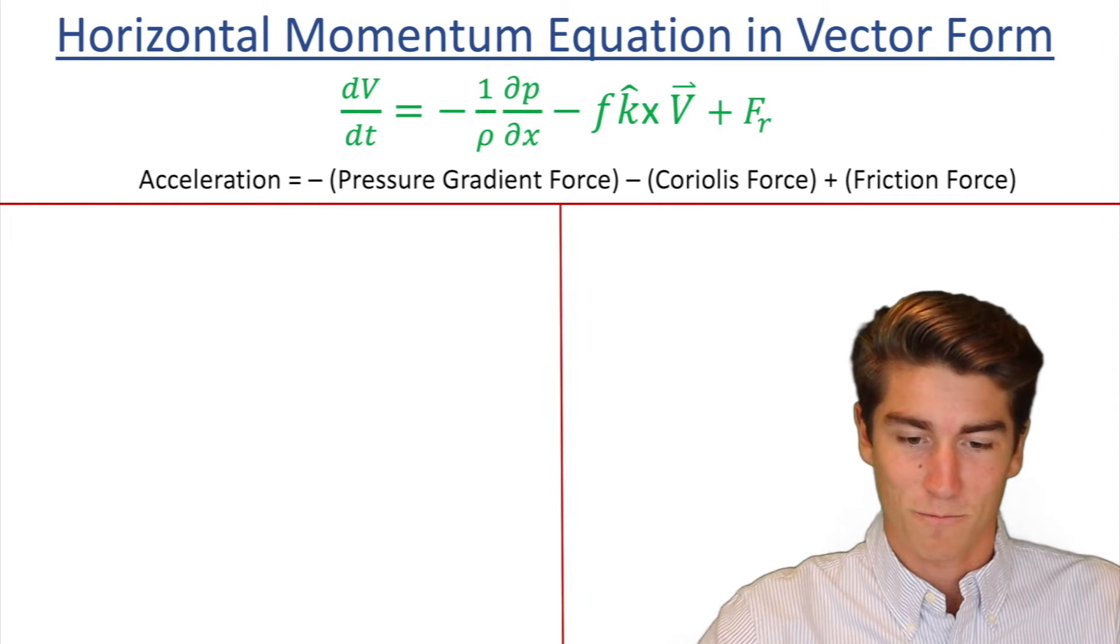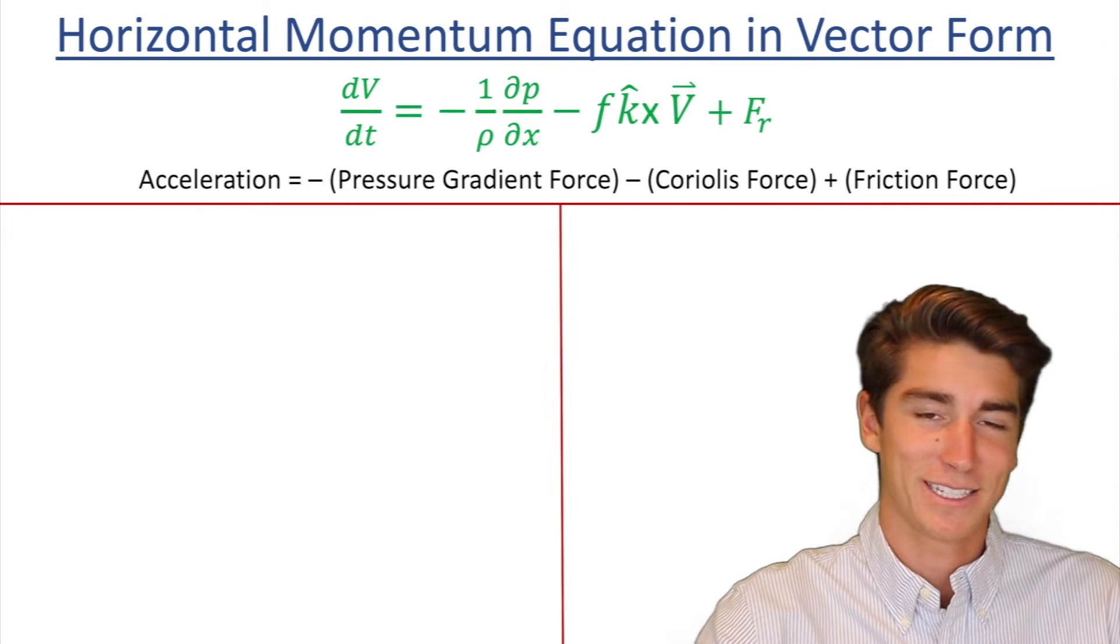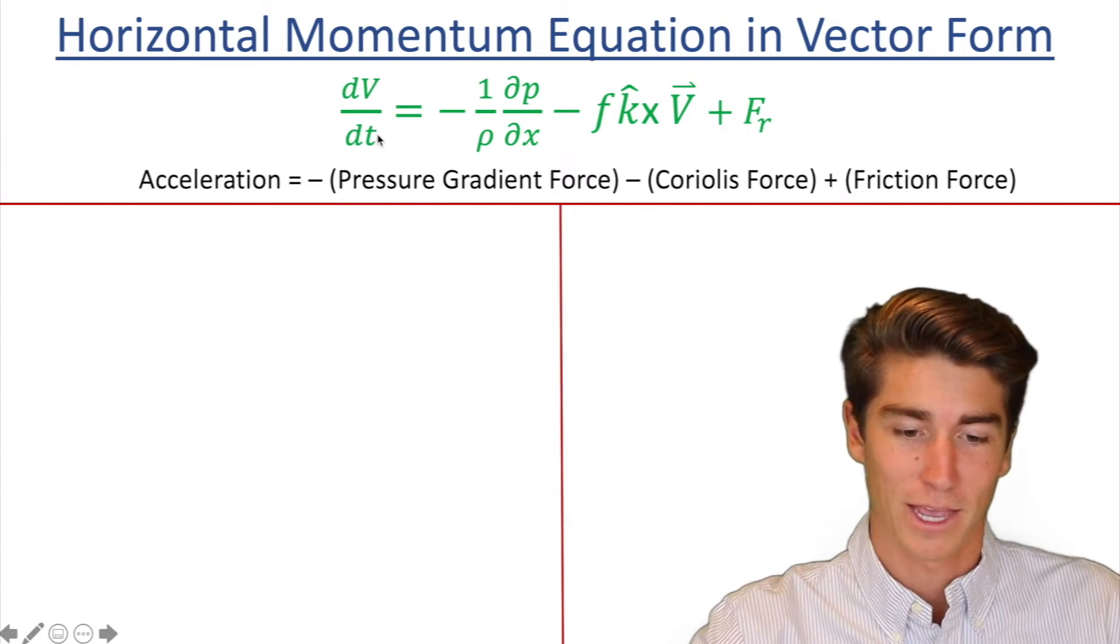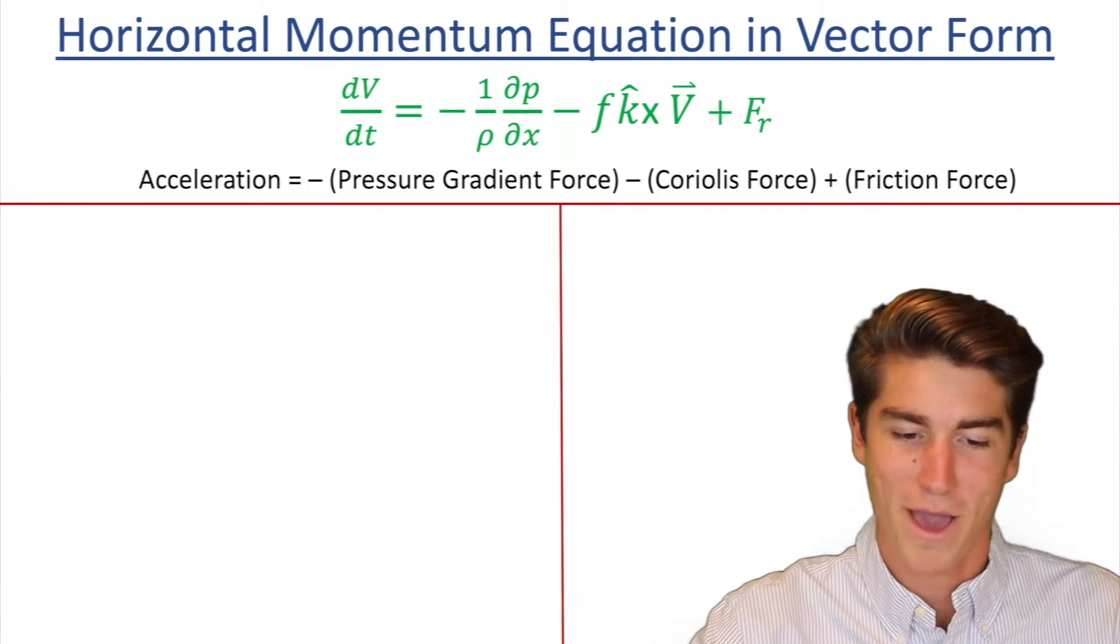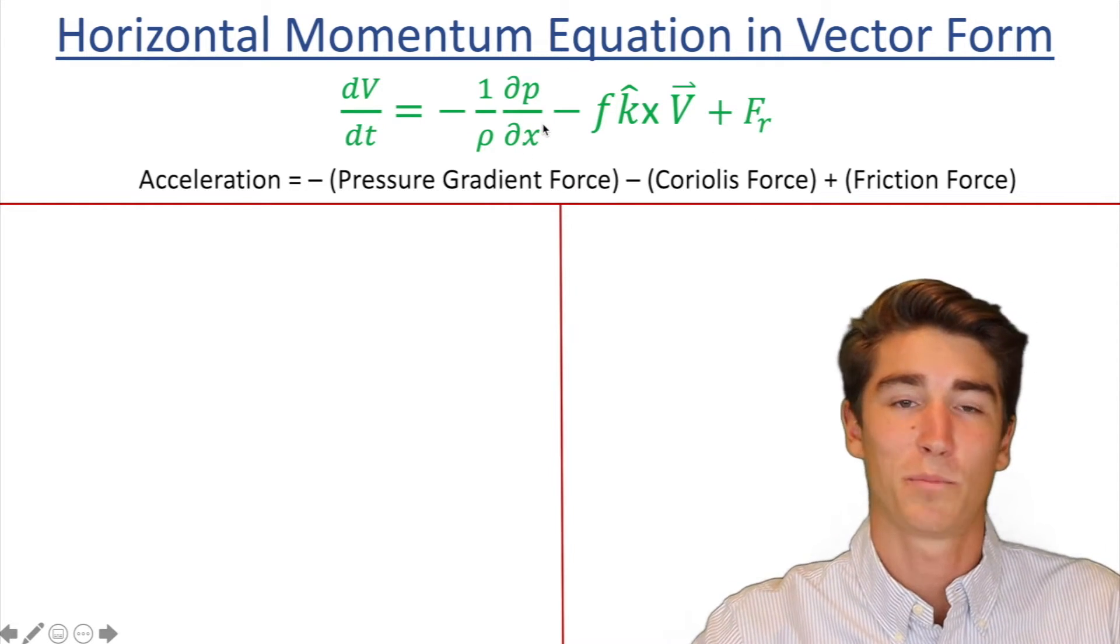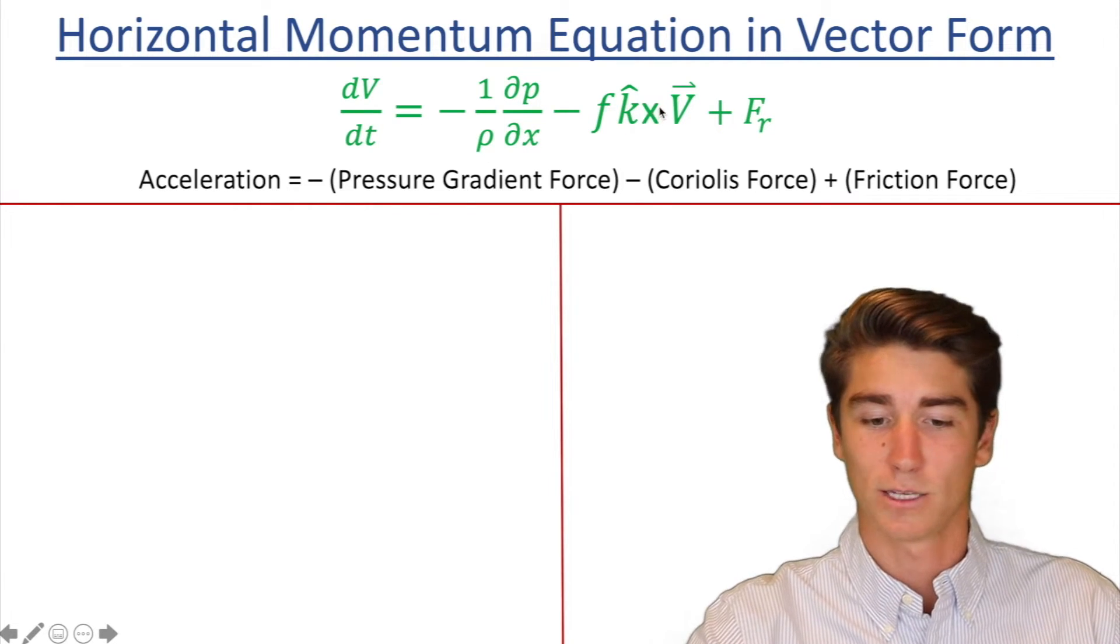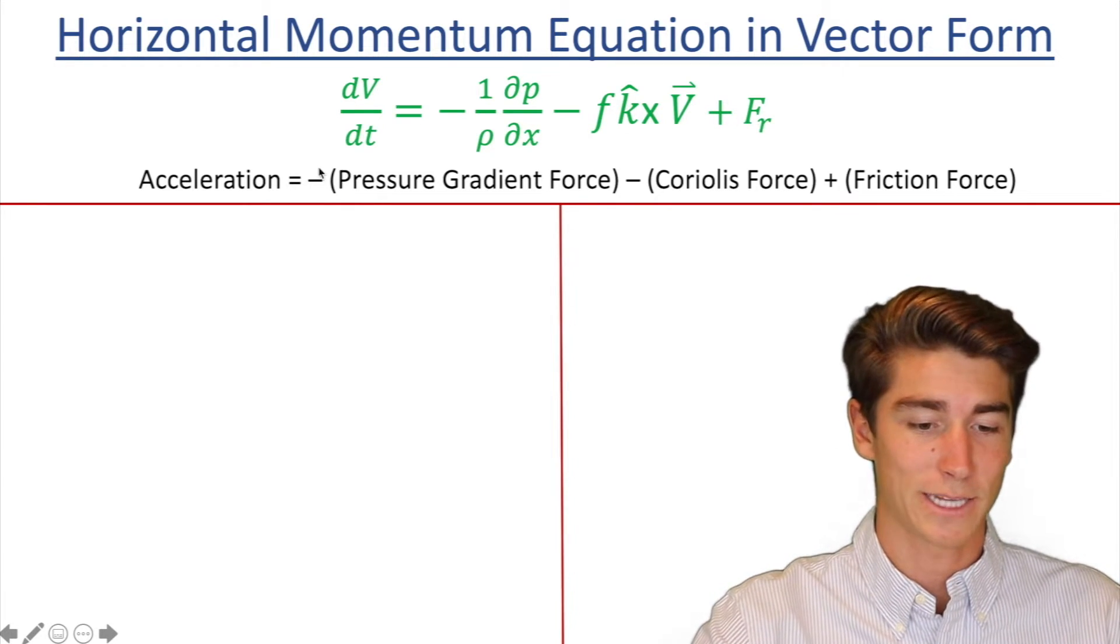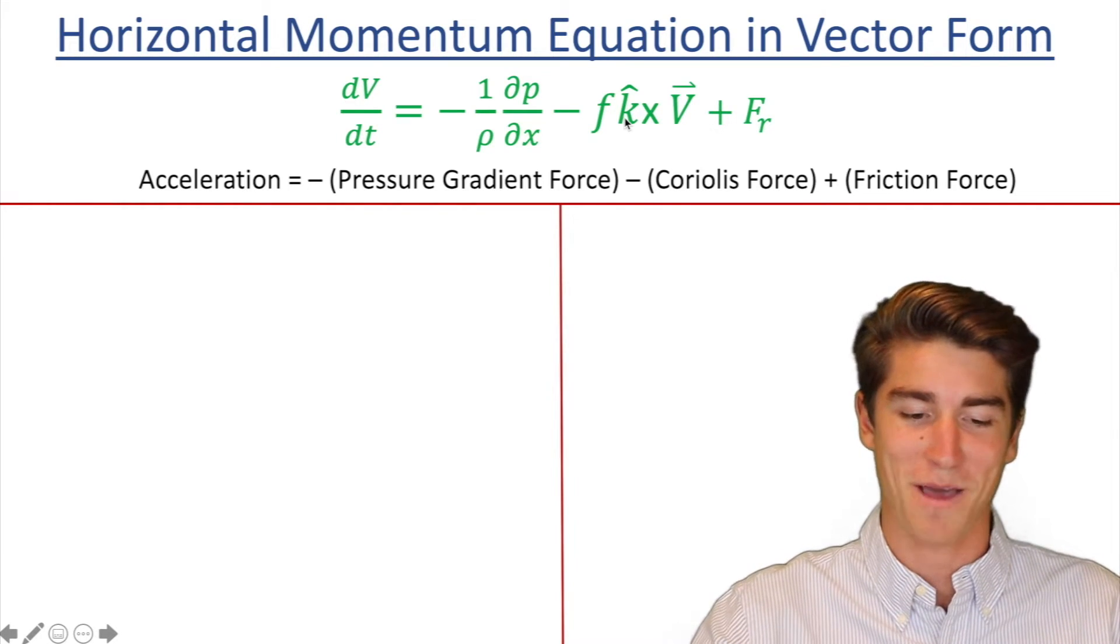Something you might not have realized though, is that this is basically just force equals mass times acceleration in disguise. It's Newton's second law. On the left hand side, we have acceleration. And then on the right hand side, we have force divided by mass. You might be saying, where's the mass? But it's kind of built into these different terms. They're all per unit mass. And you know they're forces because this one's the pressure gradient force, this one's the Coriolis force, and this one's the friction force. So in total we have acceleration equals forces per unit mass. It's just Newton's second law for the atmosphere.